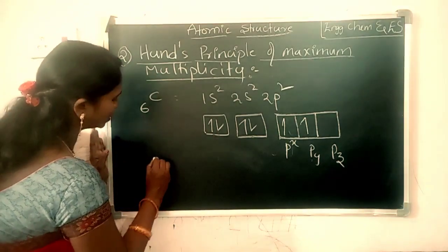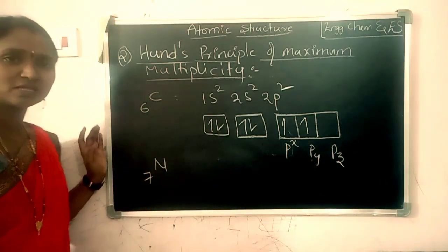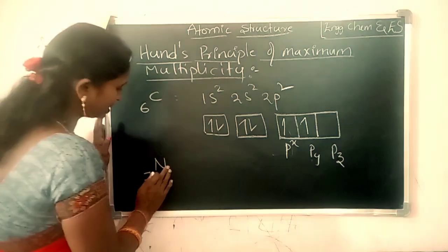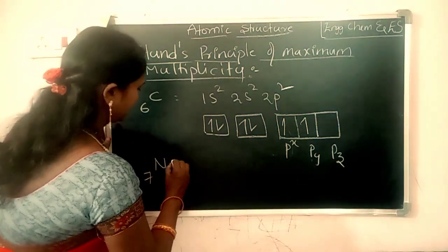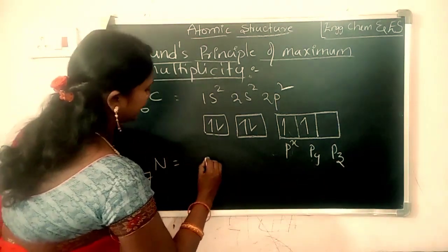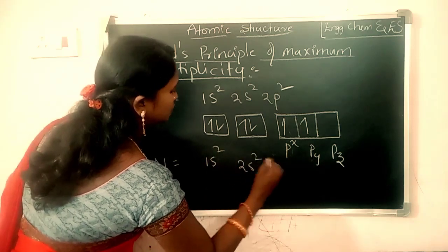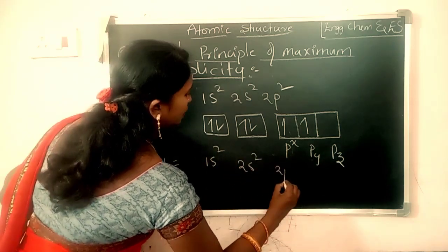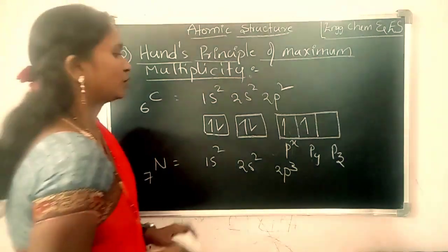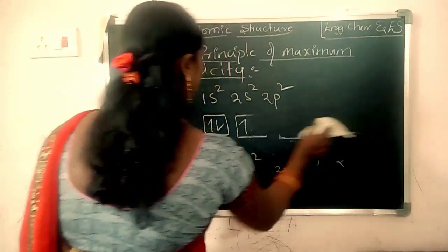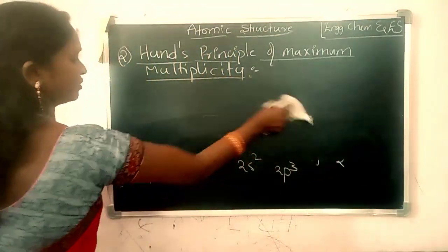In the same way, let us take Nitrogen. Nitrogen has atomic number 7, which means it contains 7 electrons. The electronic configuration is 1s2, 2s2, 2p3.